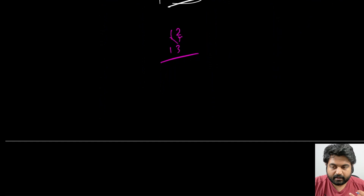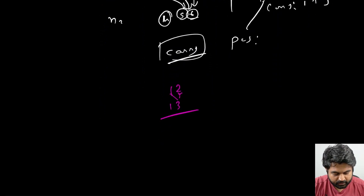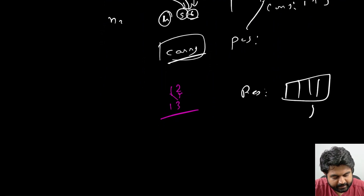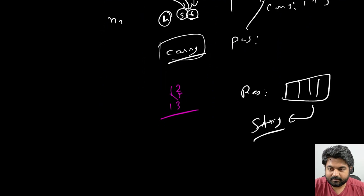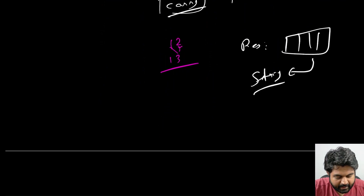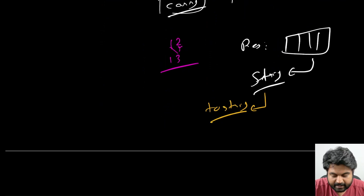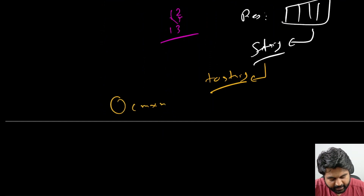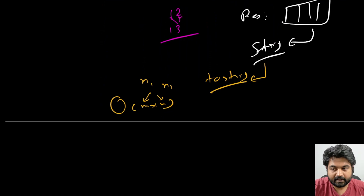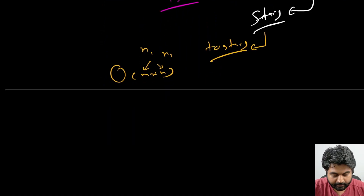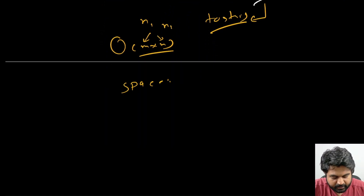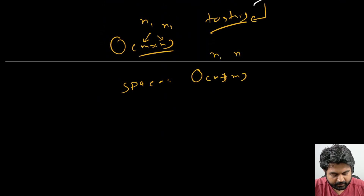After computing, we have results stored in an array which we need to convert back to a string using StringBuilder or other built-in methods, then return it as the answer. This solution runs in O(m × n) time complexity where m is the number of digits in nums1 and n is the number of digits in nums2, since we multiply every digit against every other digit. Space complexity is O(m + n) for the result array.